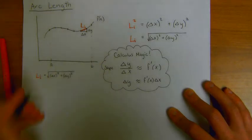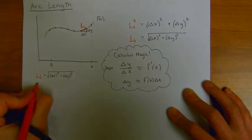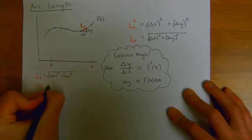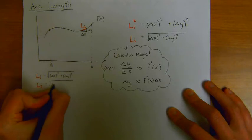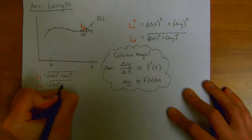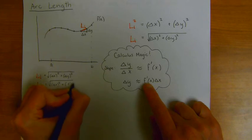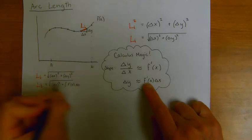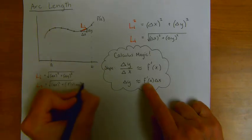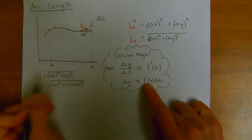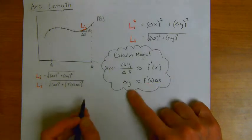And we just decided that delta y squared can be replaced with f prime of x delta x squared. And the nice thing here is that now I have everything written in terms of x's. I've gotten rid of the y's, and I have this as a function of x's.